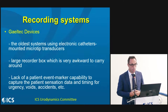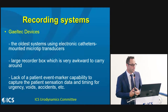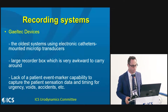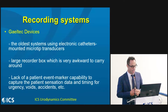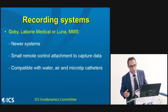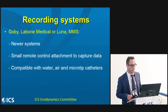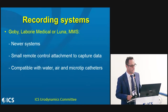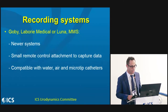Different recording systems can be used. The most commonly used and oldest are the Galtech devices, which use microtip transducers. The disadvantage of Galtech devices is that they have larger recorder boxes, which are awkward to carry, and they lack a patient event marker, so we cannot capture patient sensation data during pressure recording. Newer systems now on the market include the Labory, Gobi, and Luna systems by Labory and MMS. They are lighter and smaller, have a small remote control allowing the patient to capture data during the 4-hour test, and can be compatible with water-filled, air-charged, or microtip transducer catheters.